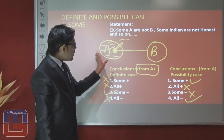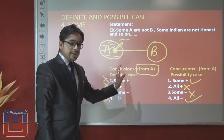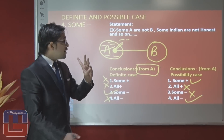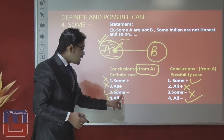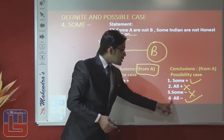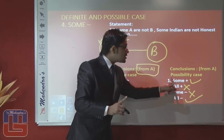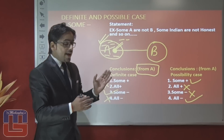So remember: if some negative information is given, only three conclusions can be true regarding the first variable: some negative (definite), some positive (possible), and all negative (possible). These are the valid conclusions in the case of some negative statement.